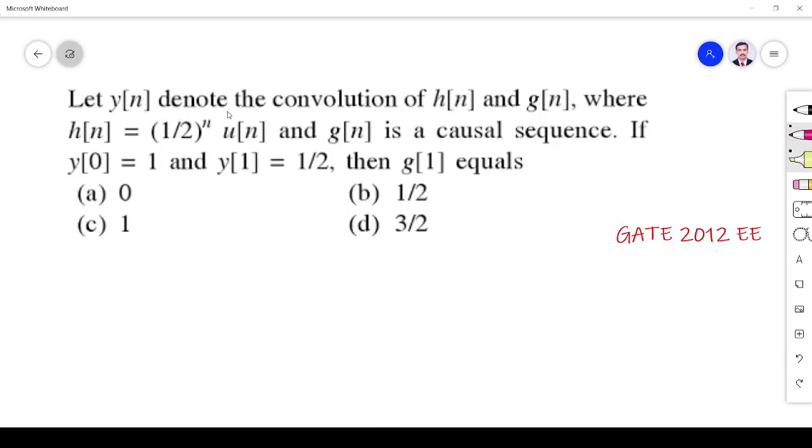The question is: let y of n denote the convolution of h of n and g of n. So y of n is convolution of h of n, g of n.